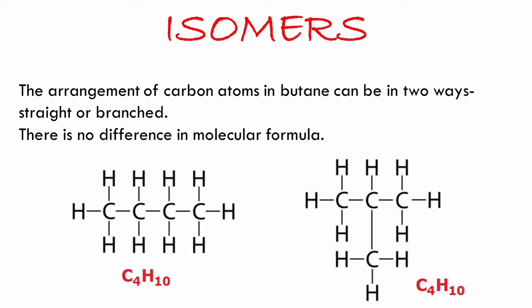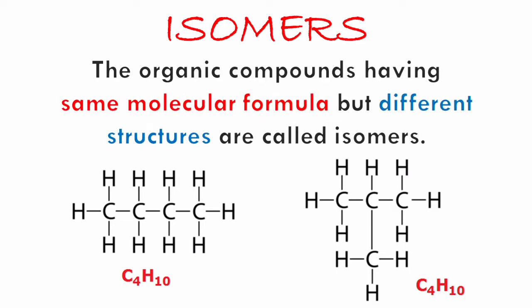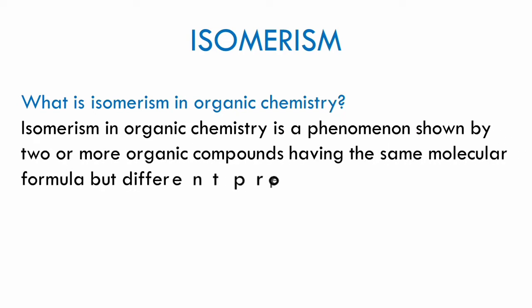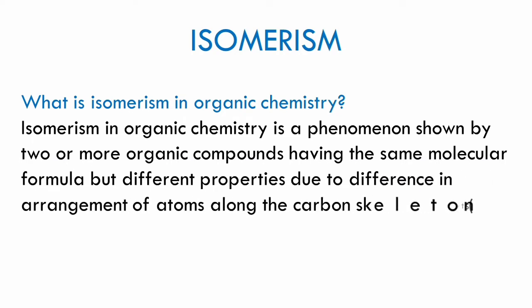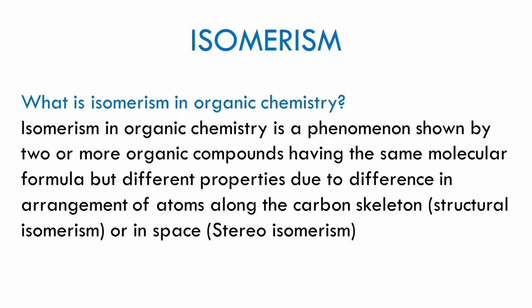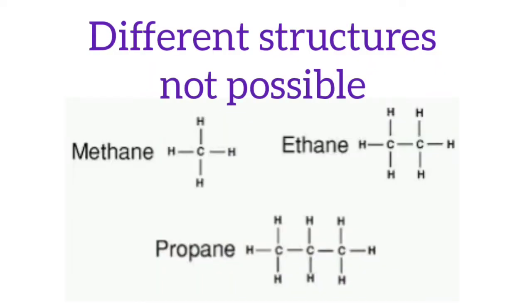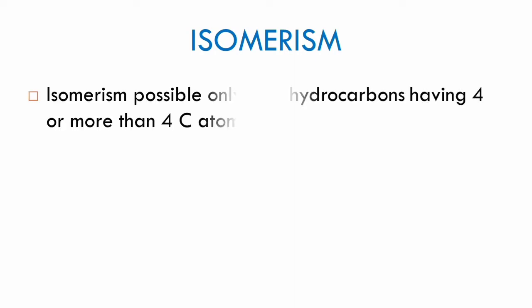There is no difference in the molecular formula, but these two structures are called isomers of butane because chemically they are different. Organic compounds having the same molecular formula but different structures are called isomers. Isomerism is a phenomenon shown by two or more organic compounds having the same molecular formula but different properties due to difference in the arrangement of atoms along the carbon skeleton or in space. Isomerism is not shown by the first three members of the alkane family, because different structures with those numbers of carbon atoms are not possible. Isomerism is possible only for hydrocarbons with four or more carbon atoms.